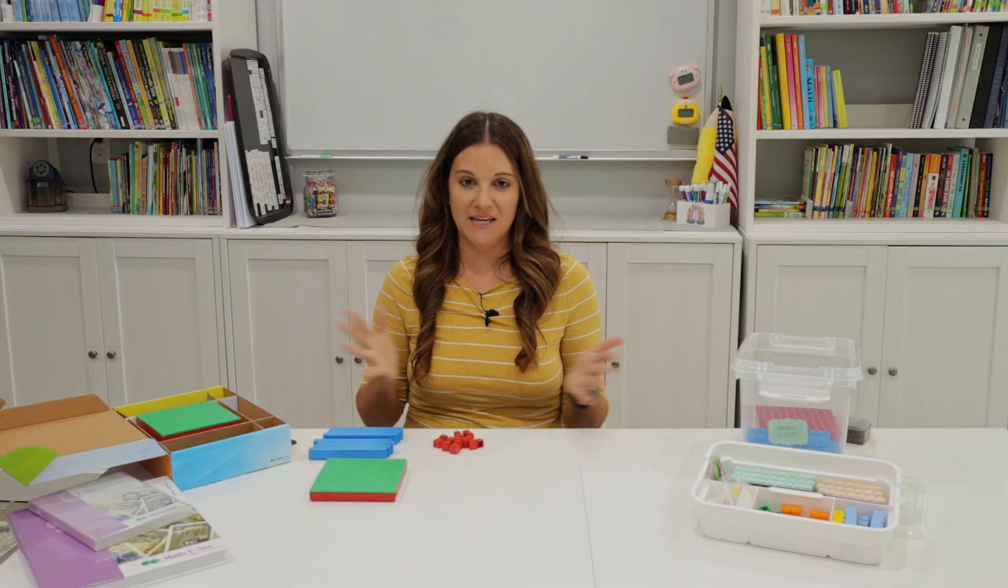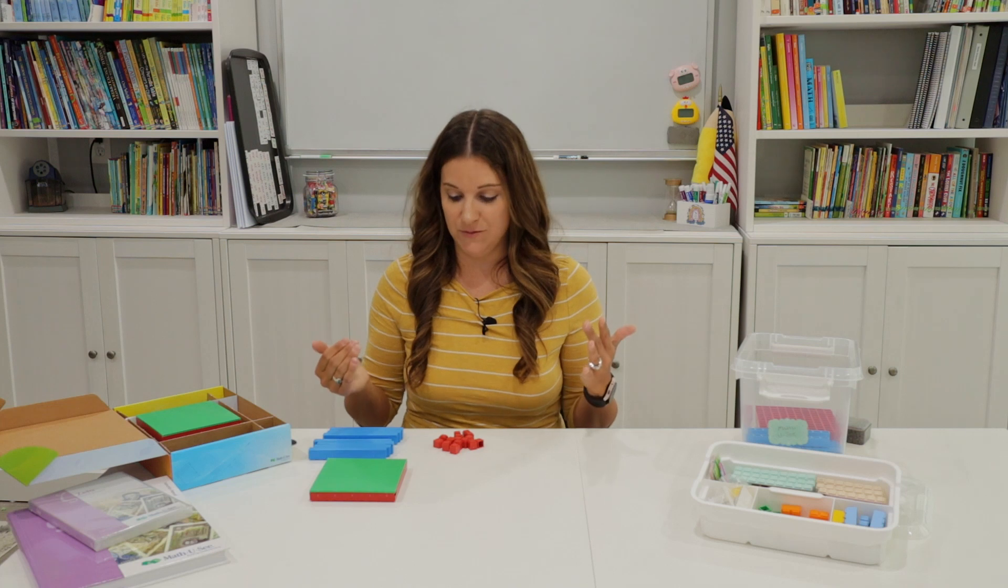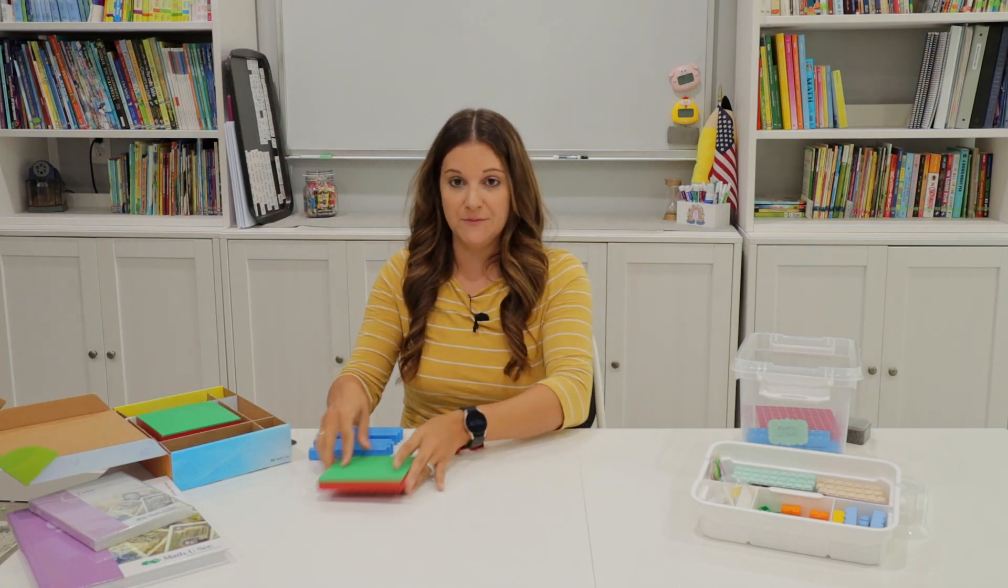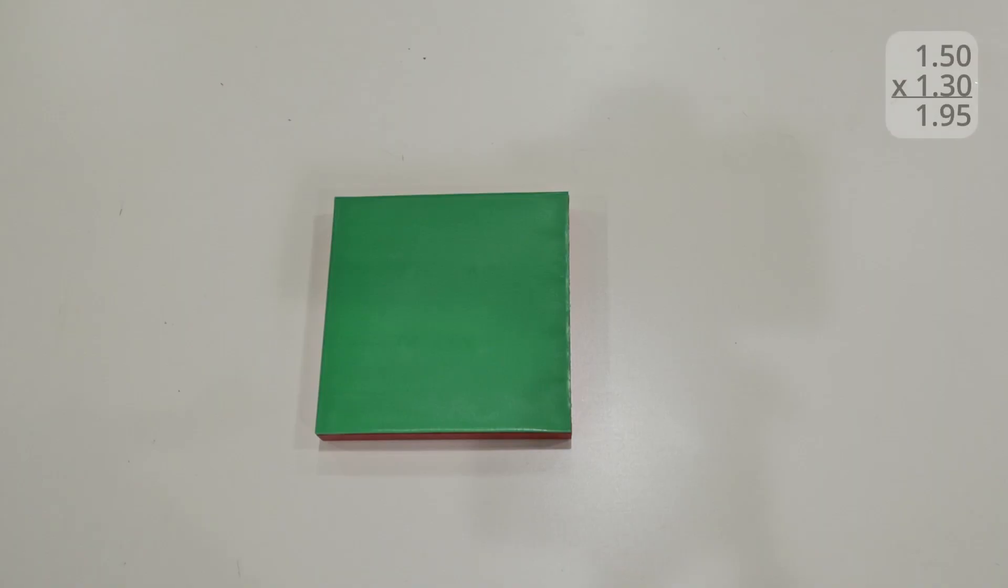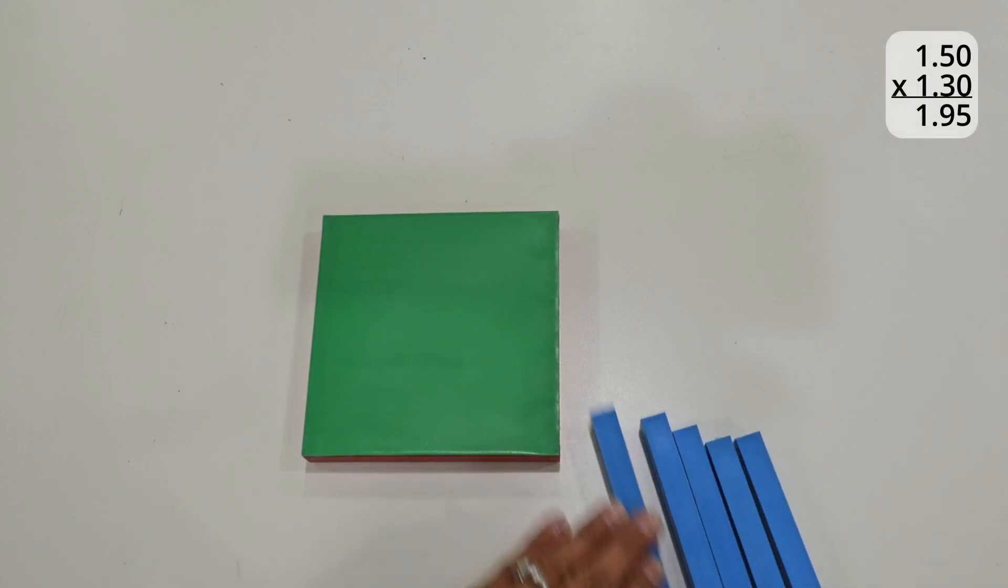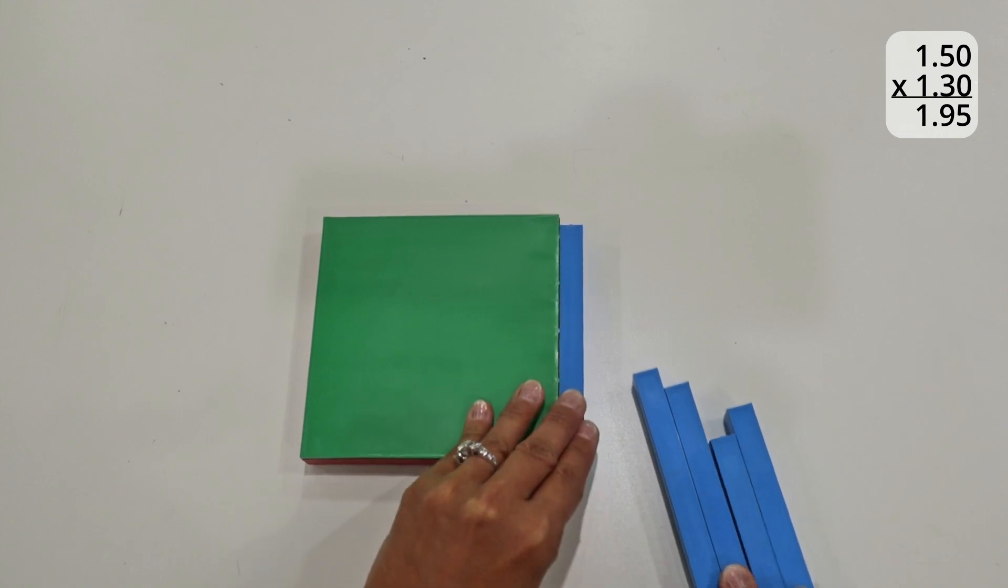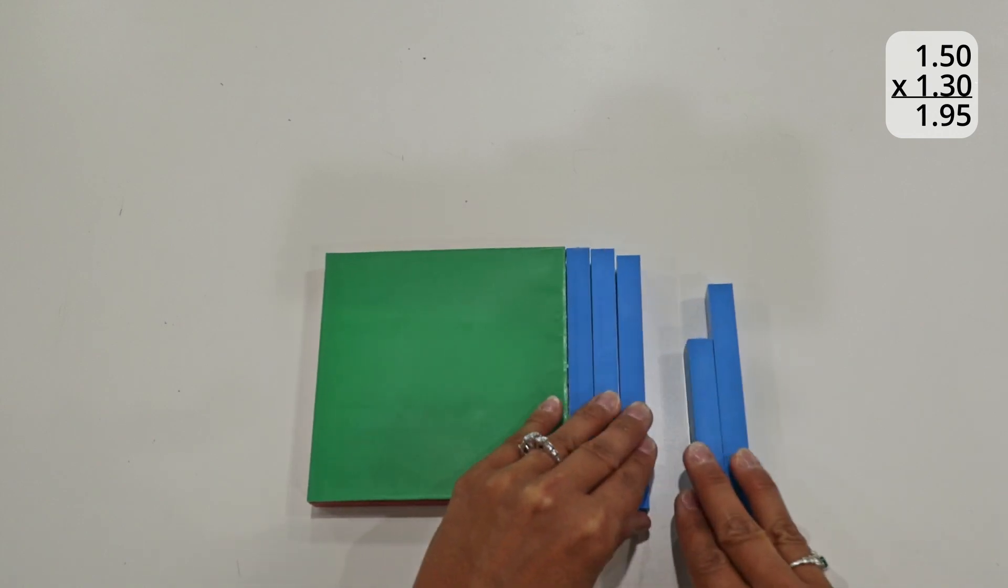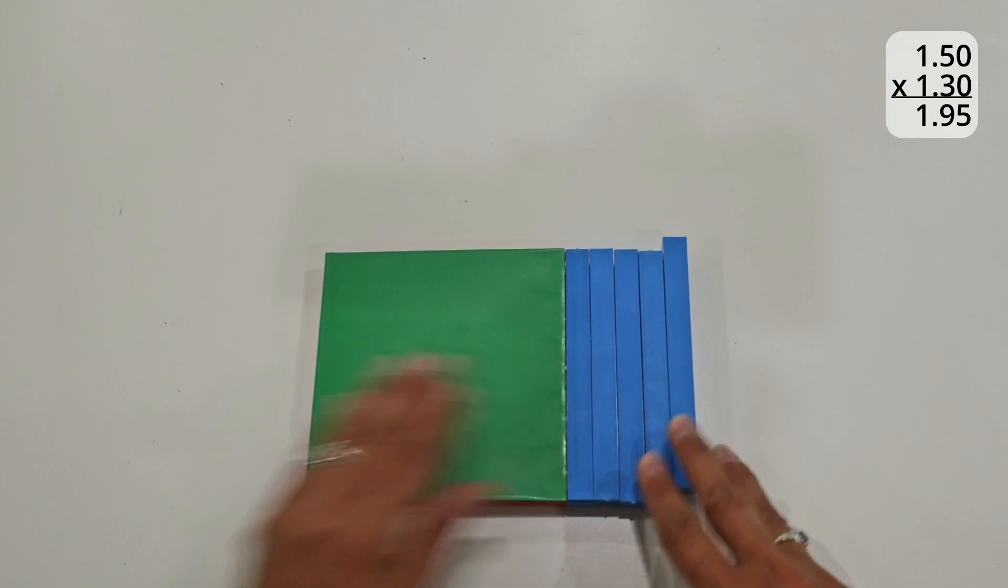The next example I'm going to give you is multiplying a decimal number. So the example I have right now is going to be one and five tenths. So what I'm going to do is I'm going to set this up as my one, and then these are my tenth, the tenth bar, and I'm going to put it alongside right here.